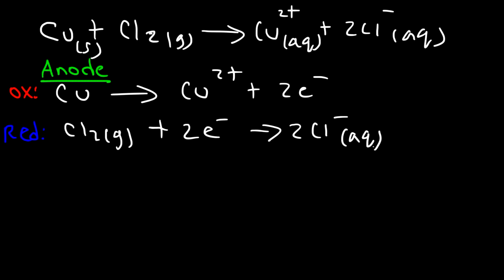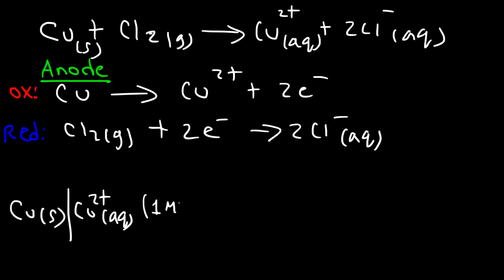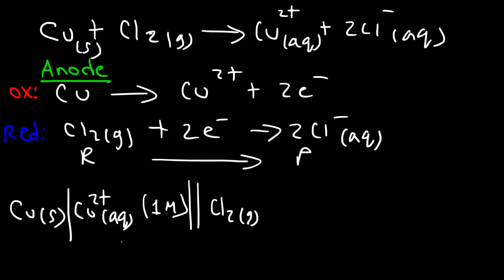To write the cell notation, start with the anode: copper solid. Use a single vertical line because we're changing phase from solid to aqueous. Then Cu²⁺ in aqueous phase at 1 M standard concentration. A double vertical line separates the two half cells. On the right side, we start with the reactant: gaseous chlorine. Because it's a gas, we use a pressure value of 1 atm rather than a molar concentration.